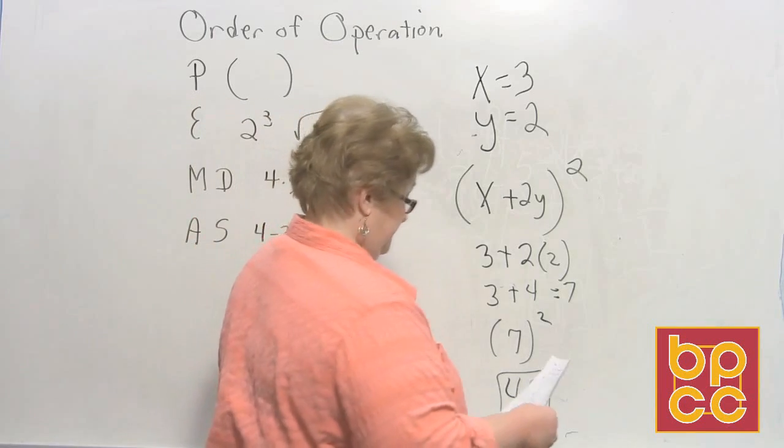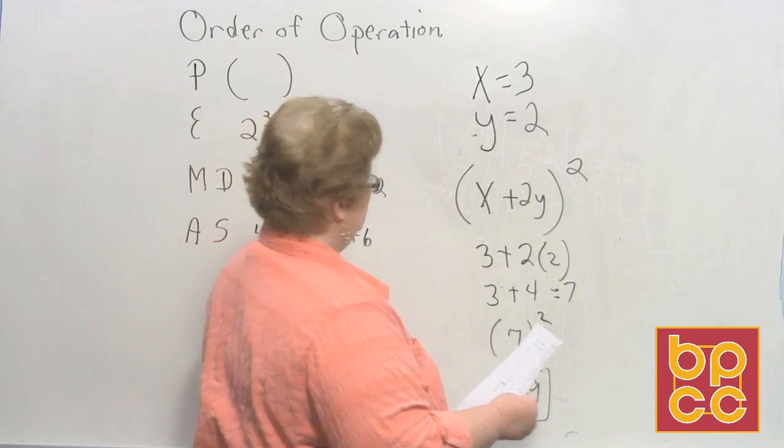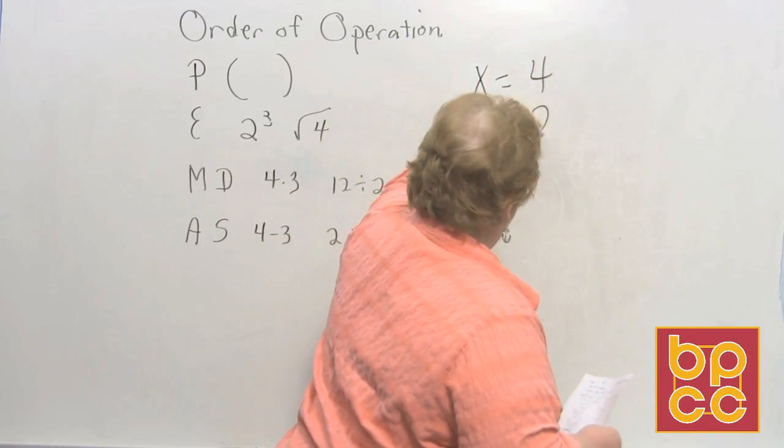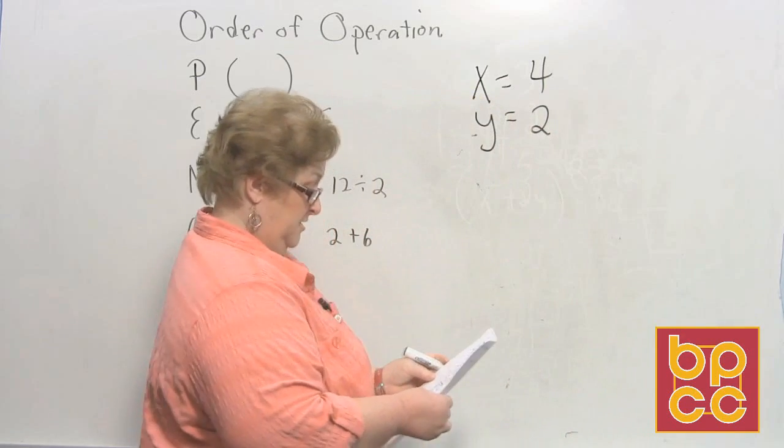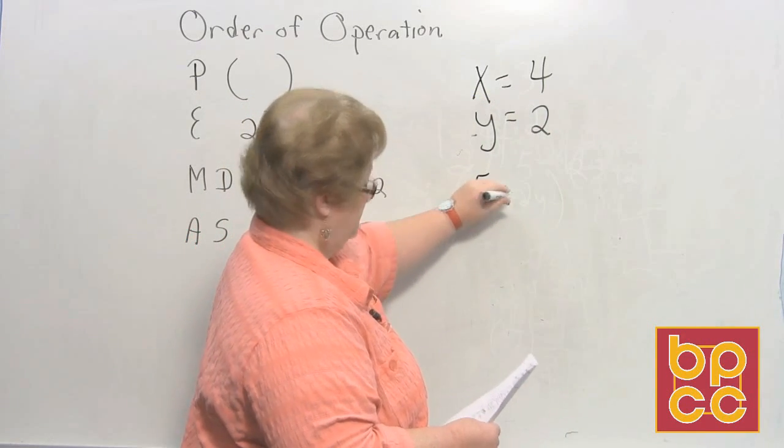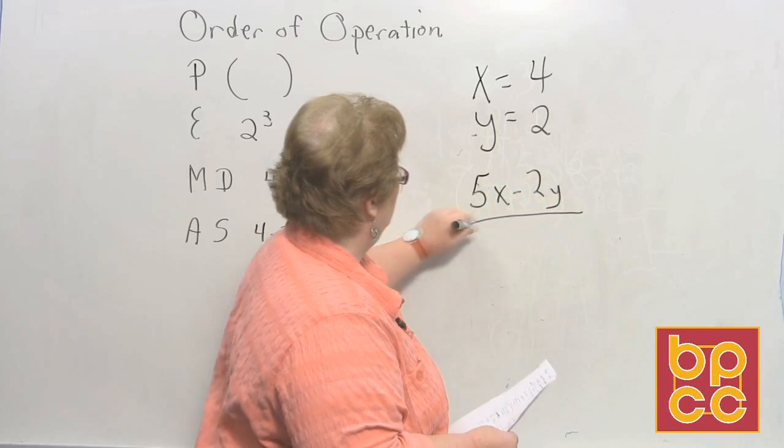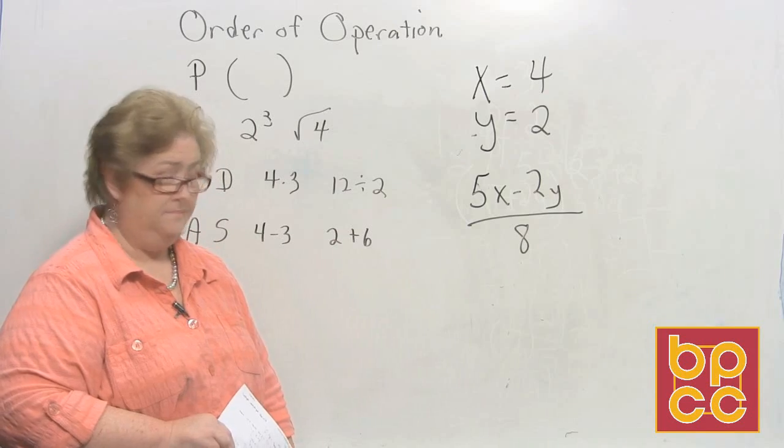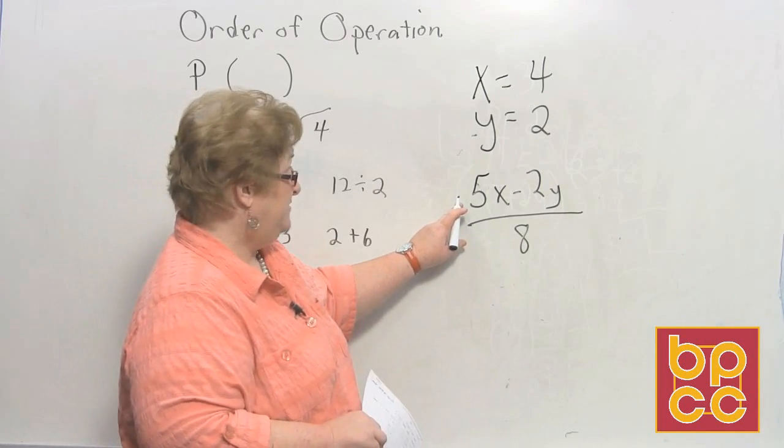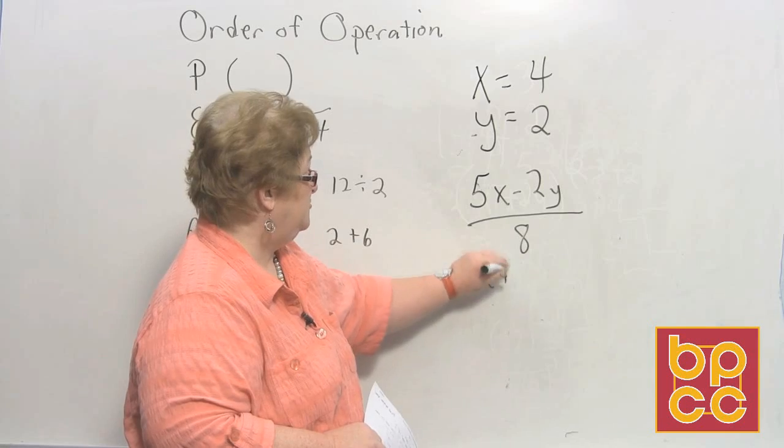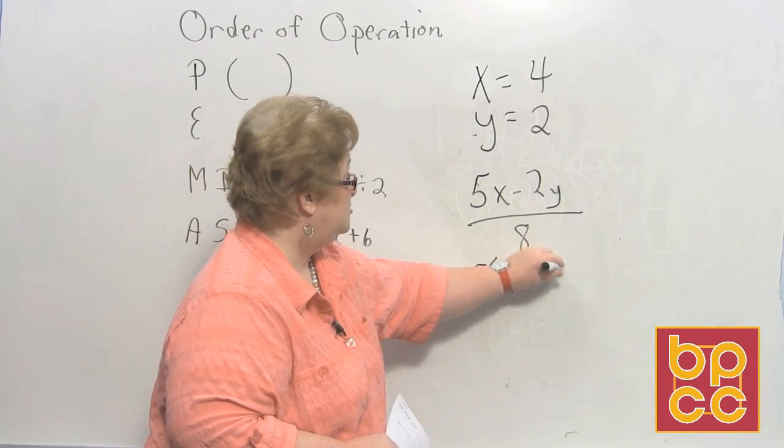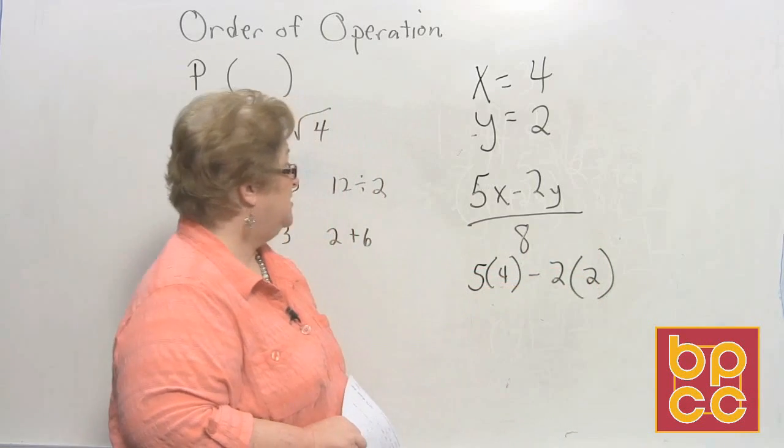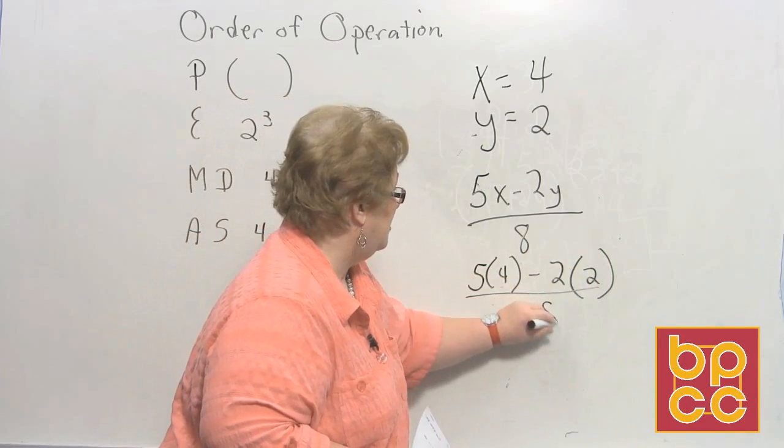Okay. Let's try another one. How about this time, I'm going to let x be, say, 4. And I want y to be 2. All right. Let's try this one. 5x minus 2y over 8. Okay. Let's see. You ready to sub in the x and the y? Okay. Here we go. 5 times x means 5 times 4 minus 2 times what's y? 2. Okay. All right. That looks good so far. And then, of course, we have that over 8.